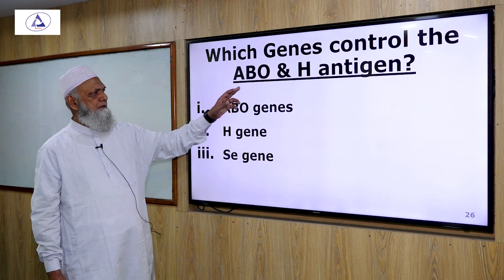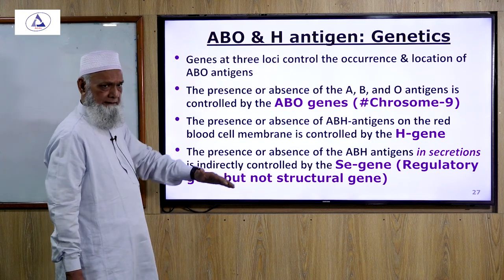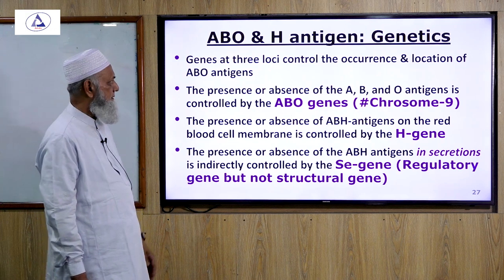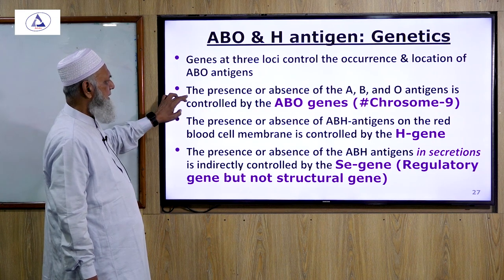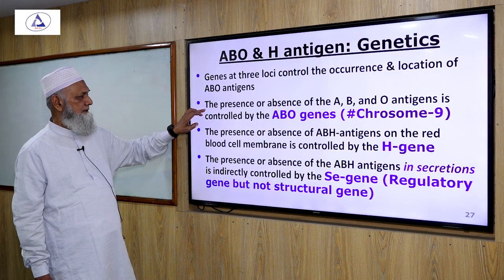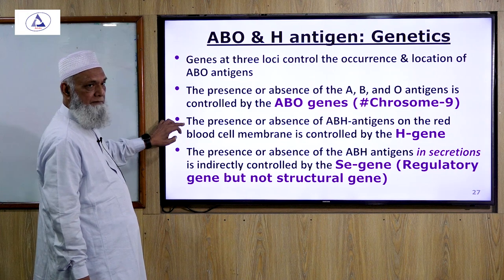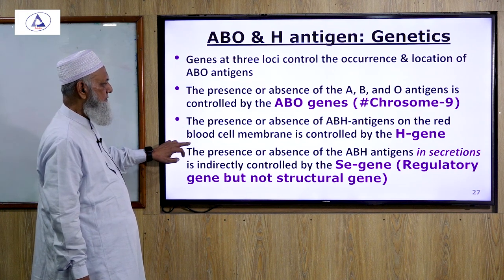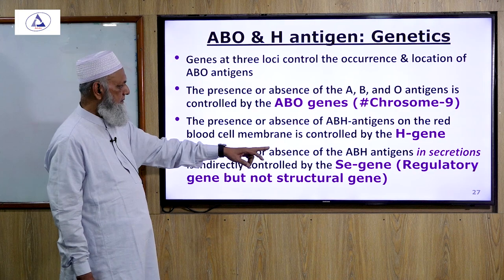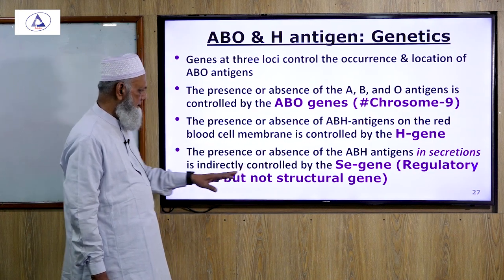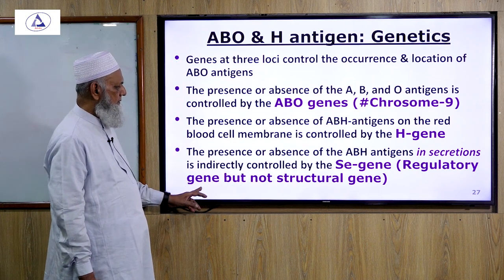Which genes control ABO and H antigens? These are the ABO gene, H gene, and Se (AC) gene. ABO and H antigens are genetically inherited in Mendelian fashion. Genes at three loci control the occurrence and location of ABO antigens. Presence or absence of A, B, and O antigens is controlled by ABO genes on chromosome 9. The presence or absence of H antigen on the red blood cell membrane is controlled by the H gene. Presence or absence of H antigen in secretions is indirectly controlled by the Se (AC) gene, which is a regulatory gene, not a structural gene.